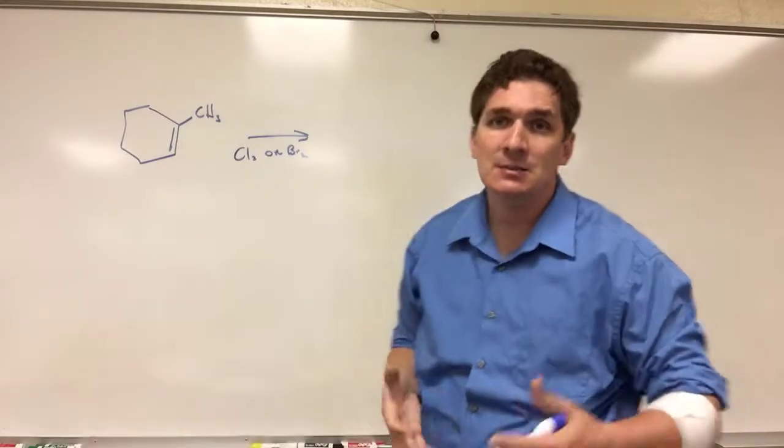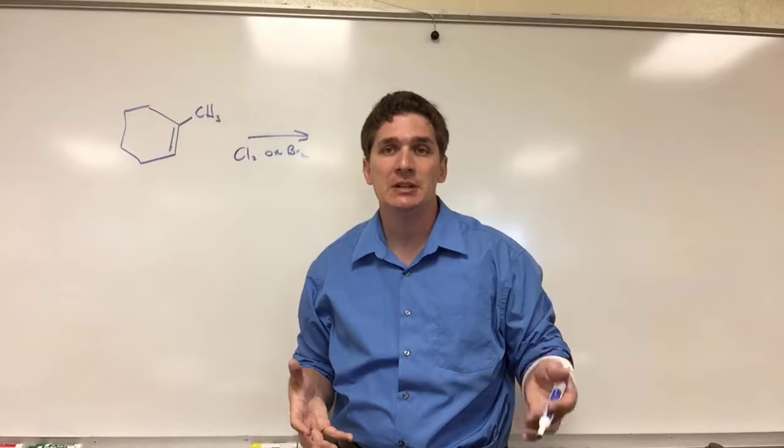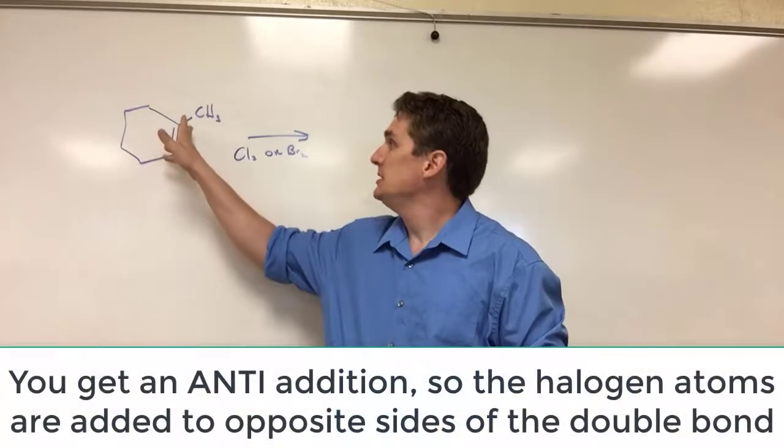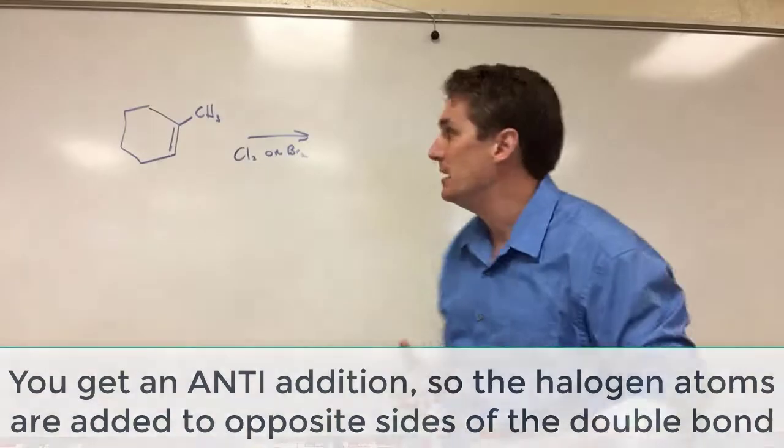What's the complication with this? Well, the mechanism is really complicated, but basically what ends up happening is that you do an anti addition. So we're going to attach two halogens on opposite sides of this double bond.